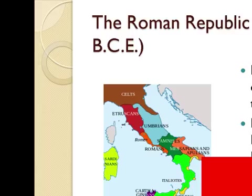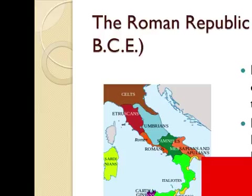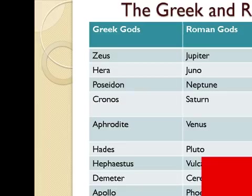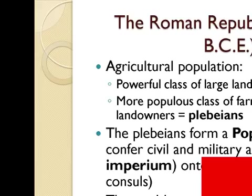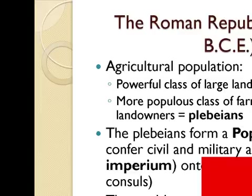The Roman Republic, 509 to 133 BCE. Etruscan kings ruled over the Latins for three centuries. In 509 BCE, the Latins overthrew the Etruscans and formed a government of the people — Respublica. The agricultural population included a powerful class of large landowners called patricians, and a more populist class of farmers and small landowners called plebeians. The plebeians formed a popular assembly, conferring civil and military authority — the imperium — onto two magistrates called consuls. The wealthy patricians were life members of the Roman Senate and controlled the lawmaking process.